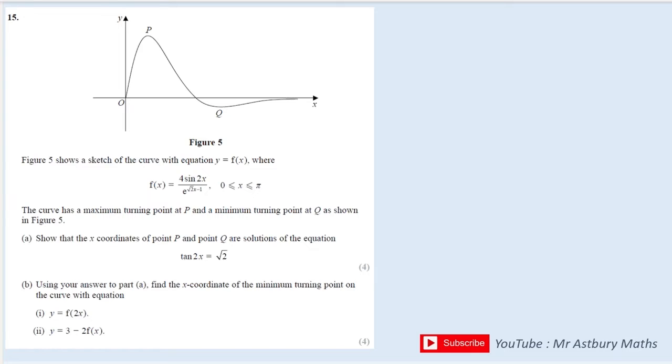Okay, this is question 15 and it gives us a function and it gives us what the function is and also the sketch. And it also gives us a domain and it also tells us that we've got a maximum and a minimum. And we need to work out what the x-coordinates are. We need to show that they are the solutions to this tan 2x equals root 2 equation.